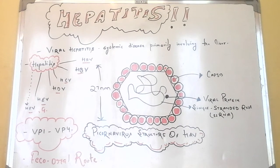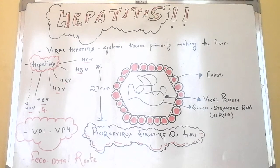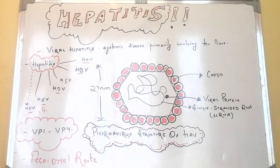Hepatitis A causes infectious hepatitis and the transmission is through the feco-oral route. It is a sub-acute disease of global distribution, affecting mainly children and young adults. Now we will talk about the properties of hepatitis viruses and morphology.